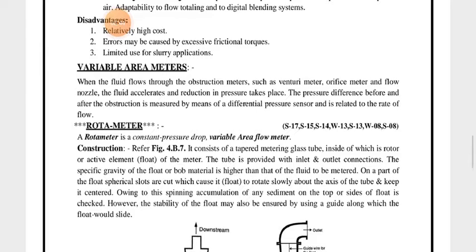There are different variable area meter devices for the measurement of flow. The first one is the rotameter, which has been asked many times in university exams — Summer 17, Summer 15, Summer 14, Winter 13, Summer 13, Winter 18, Winter 8, and Summer 8. We can observe that this question has been asked every year, so it is a very important topic.